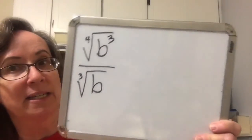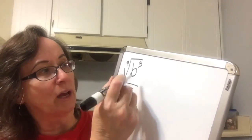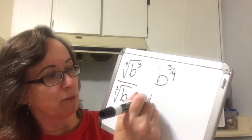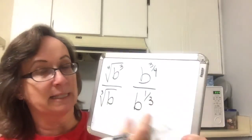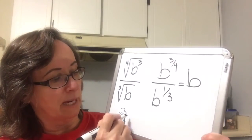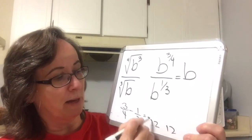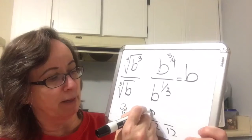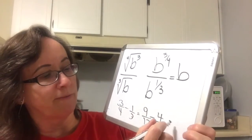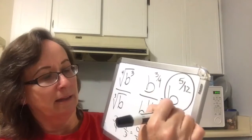Again, we must take into consideration that we have a difference of two indices. I'm going to change this one to b to the 3 fourths and this one to b to the 1 third. When I divide like bases, I subtract their exponents: 3 fourths minus 1 third. To get a common denominator of 12, I multiply the first by 3 to get 9 twelfths, and multiply the second by 4 to get 4 twelfths. So 9 twelfths minus 4 twelfths is 5 twelfths. b to the 5 twelfths would be that answer.